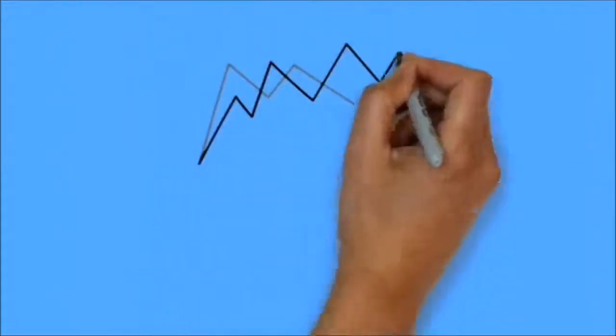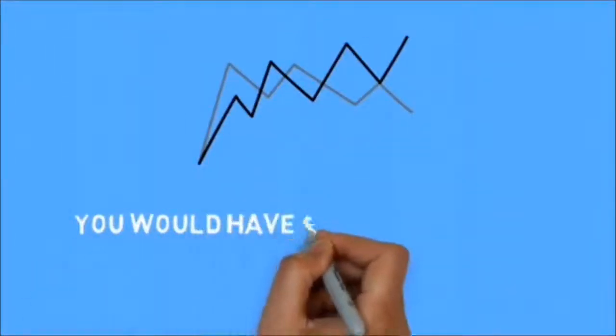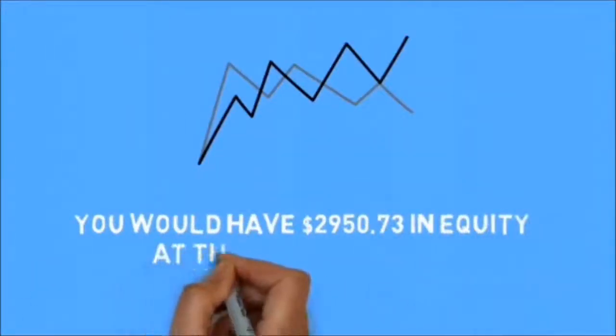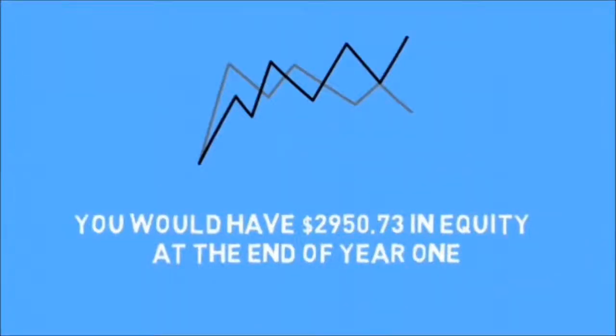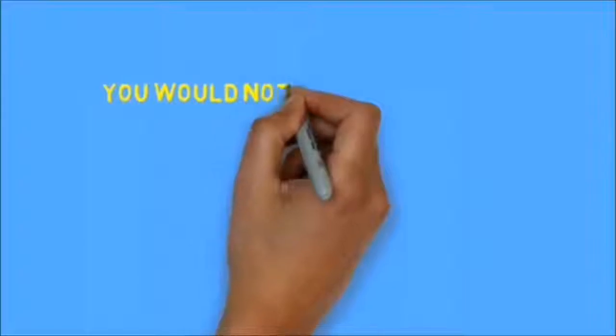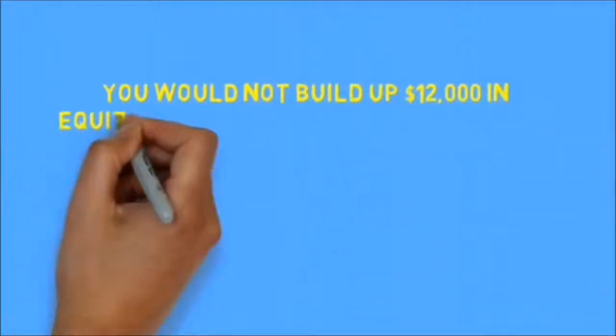If we were to disregard market price fluctuations and simply look at the charts for a standard 5%, 30-year fixed rate mortgage on a $200,000 home, you would have $2,950.73 in equity at the end of year one. You would not build up $12,000 in equity until the end of the 46th month.